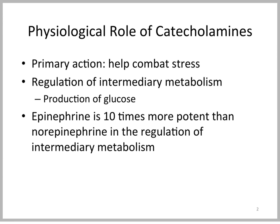So what's the physiological role of catecholamines? The primary reason they're around is to help us combat stress, and they regulate intermediary metabolism, in particular the major fuel of the body, glucose. Epinephrine is roughly 10 times more potent than norepinephrine in regulating intermediary metabolism — things such as glycogenolysis and lipolysis.